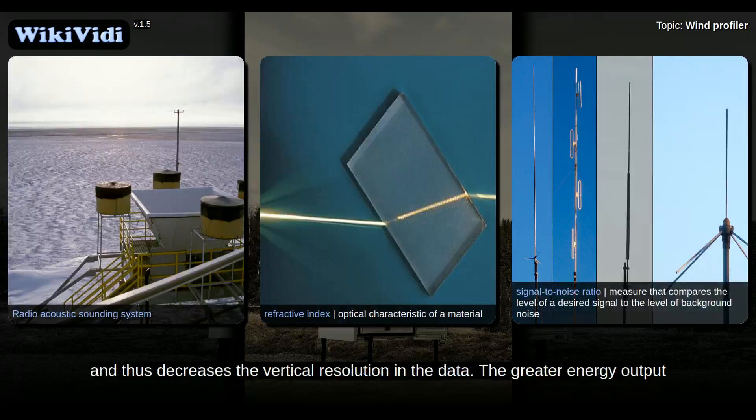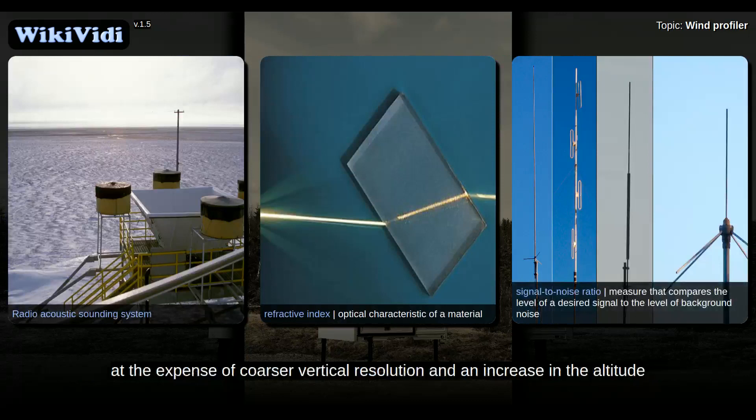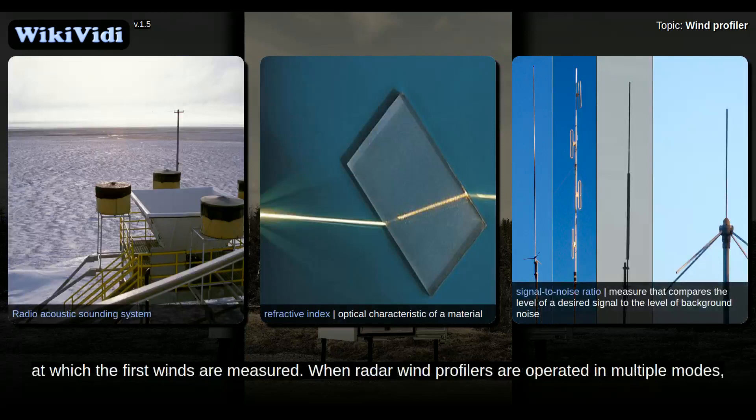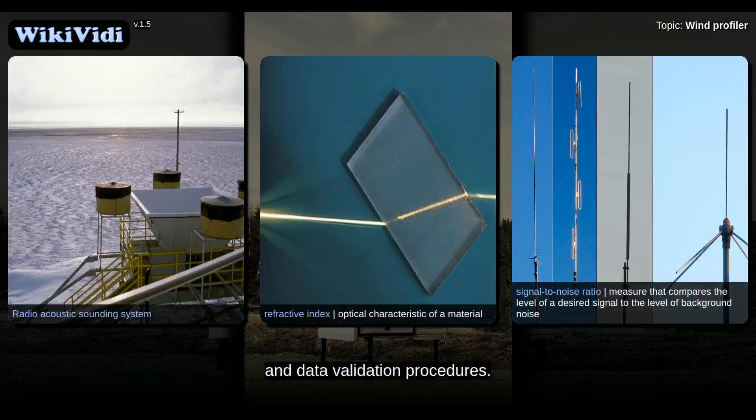The greater energy output of the high mode increases the maximum altitude to which the radar wind profiler can sample, but at the expense of coarse vertical resolution and an increase in the altitude at which the first winds are measured. When radar wind profilers are operated in multiple modes, the data are often combined into a single overlapping data set to simplify post-processing and data validation procedures.